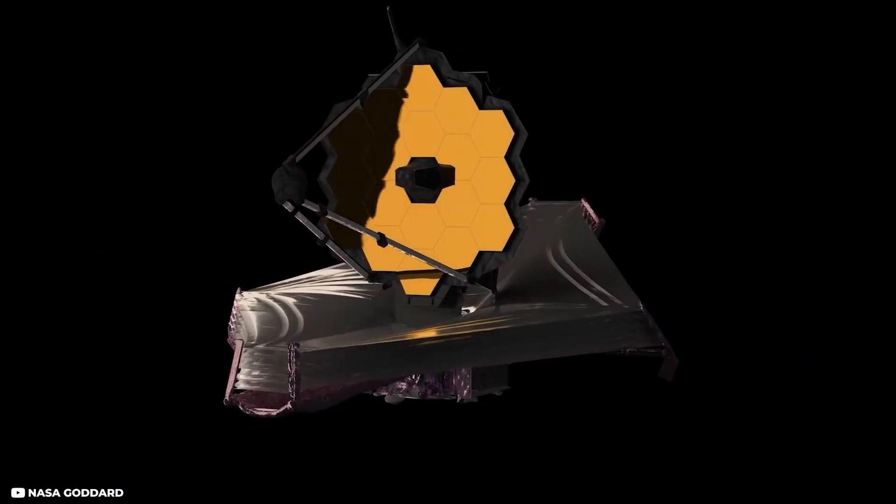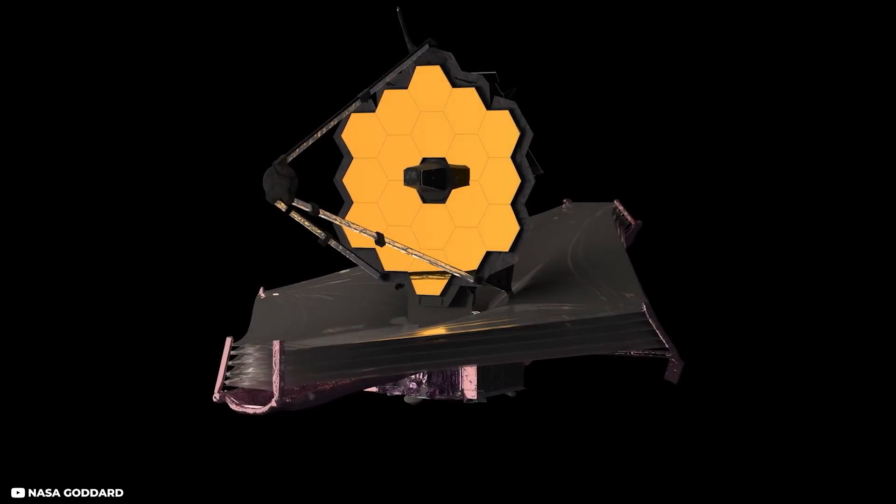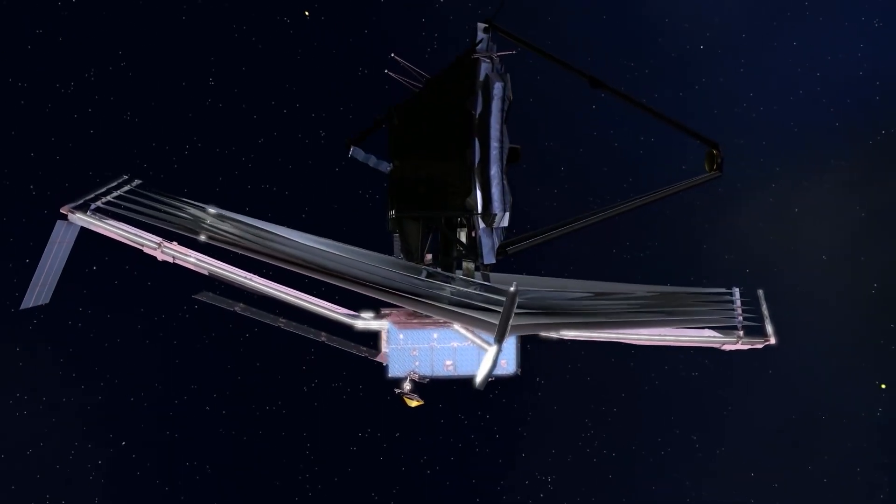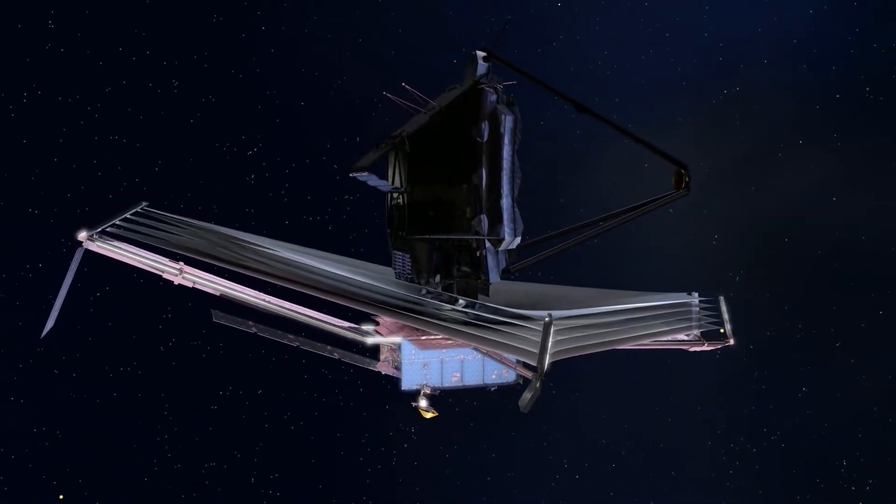If James Webb detects narrow band light like LED bulbs, it will be because it will be able to characterize the planet's atmosphere.